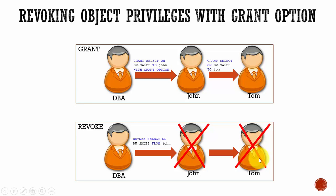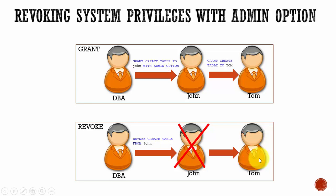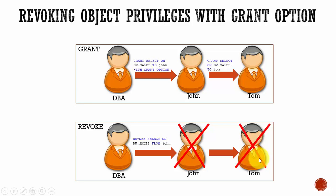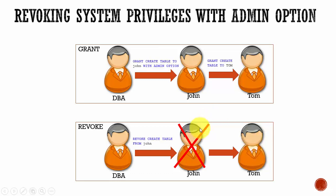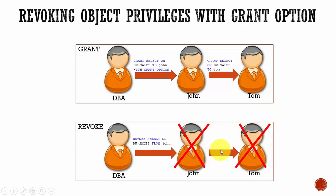Remember how system privileges and object privileges differ: with a system privilege, only John will lose it — all subsequent users will not lose it. But with an object privilege, all subsequent users will lose it. In the next session, let's go to the demo and see how they work.